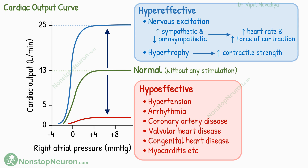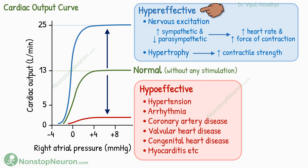This was all about cardiac output curves. In summary, the cardiac output increases with an increase in right atrial pressure, but there is a limit to this. A normal heart without nervous stimulation can increase its output up to 13 liters per minute. Nervous stimulation and hypertrophy can increase this capacity, and various pathological conditions decrease this capacity.